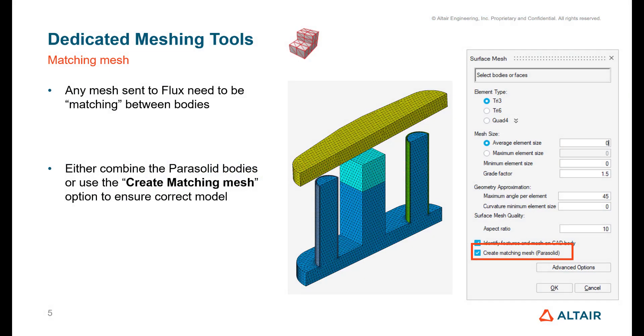One important thing when you have a mesh for flux is that the mesh needs to be matching, as we call it. That means it needs to be connected between each body. To do that, you can create the matching mesh when you mesh it, so the surface mesh will have this option in the flux solutions to make sure the mesh and geometry is perfectly assembled.